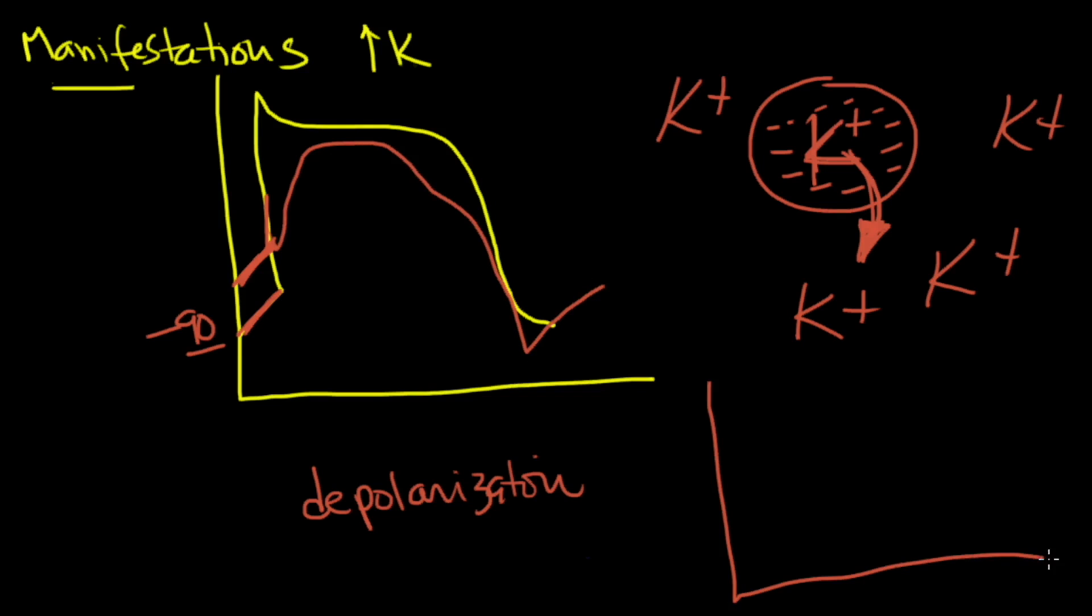As a result of that, when you look at a nice QRS complex, instead of having a discrete P wave QRS T, what you're actually going to see is the P wave is almost going to be non-existent. The R wave is going to sort of come up slightly. You're going to have this S depression and then this T wave. And it's almost going to look sinusoidal.